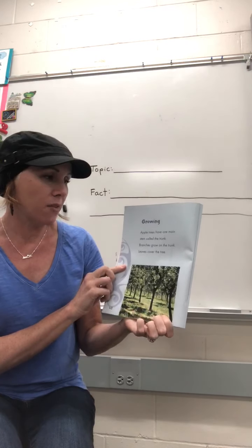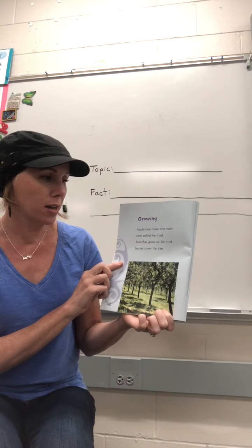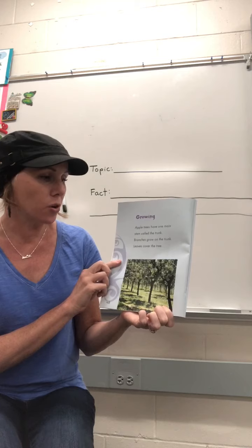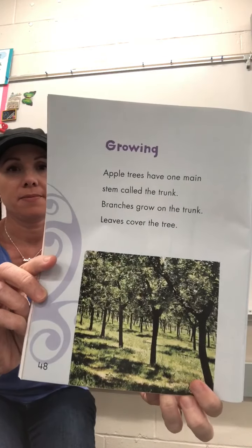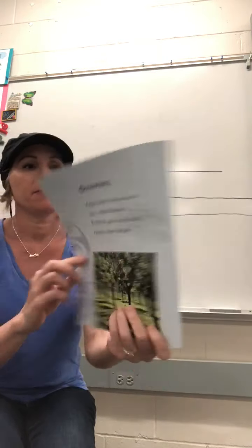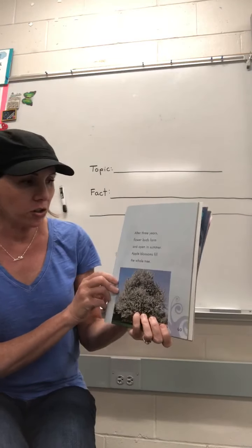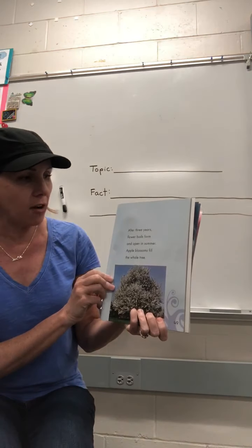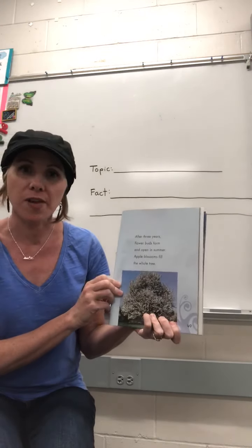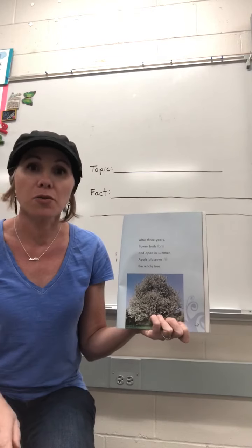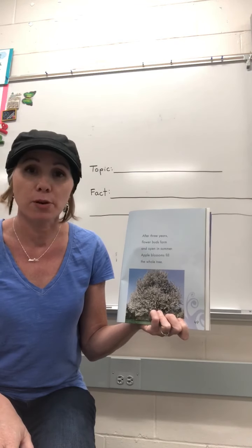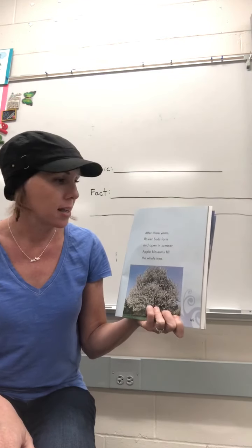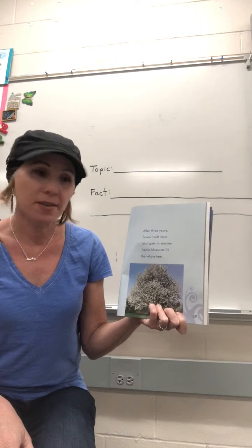Apple trees have one main stem called the trunk. Branches grow on the trunk. Leaves cover the tree. After three years, flower buds form — that's when the flower buds form on the tree. And they open in the summer.